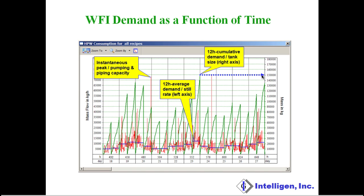This chart includes enough information for sizing all three elements of a WFI system. More specifically, the tallest green peak provides useful information for sizing the storage tank — in this case it would be around 150,000 kilograms. The blue line for the same time interval provides useful information for sizing the still, at around 13,000 kilograms per hour. It is important to mention that if we reduce the averaging interval, the tank size will go down and the still rate will increase. In other words, there is a trade-off between tank size and still rate.